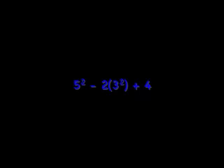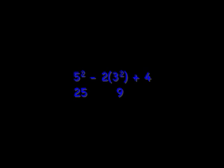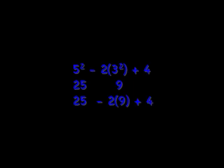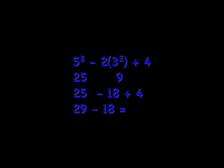First, you have to do what's in parentheses. Three squared is nine. Then, doing the exponents, five squared is 25. 25 minus nine times two, or 18, plus four, is the same thing as 29 minus 18, or 11.